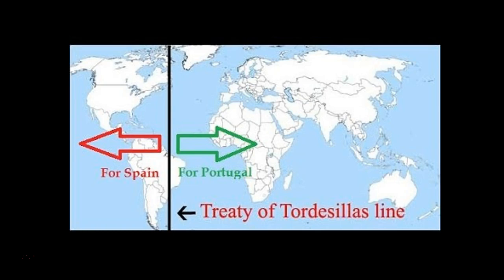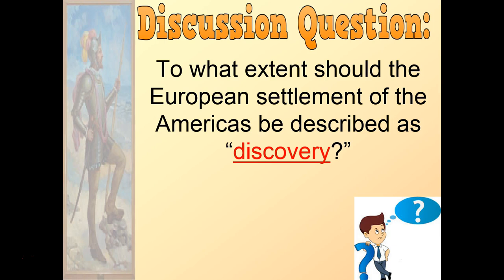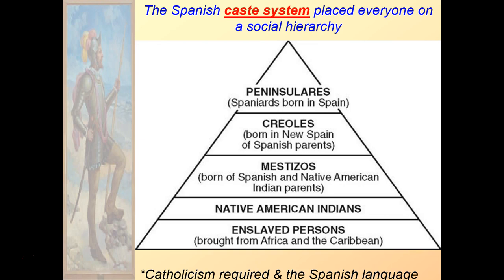Another thing we discussed is whether we should even consider Columbus's landing in the Americas to be a discovery, since other explorers like Leif Erikson had been here prior to Columbus, and of course Native Americans had lived here for thousands of years. Certainly it was monumental — but was it a discovery? Here's a graph of the feudal system, or caste system, that the Spanish tried to implement in the New World. The highest on the social pyramid are the Spanish born in Spain — the purebred. The lowest are African slaves, with Native American Indians just above them.